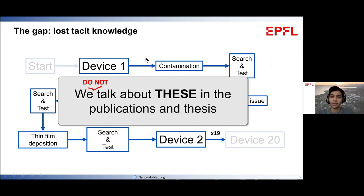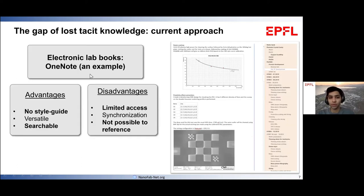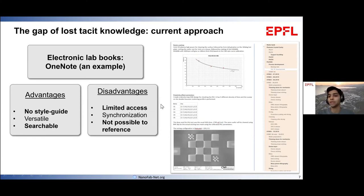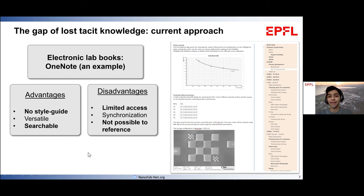At the moment, the way it's done in our laboratory is through electronic lab books, which have the advantages of having no strict style guide. You can search through them when writing your thesis and want to compile things that didn't necessarily lead to publications, but might be key for the next generation of students. The major drawback is that they have very limited access — if you want to share them with someone, it's not very easy. And if you spend time making these notebooks very thorough, the problem is that you cannot really cite them later on, and you have to rewrite them in your own publications.